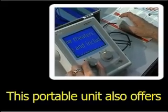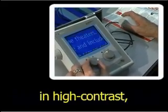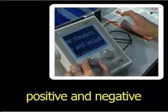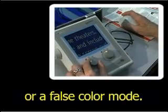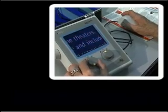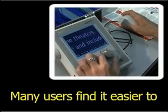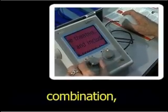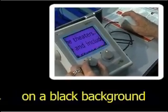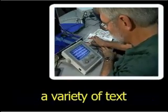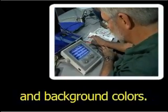This portable unit also offers users the option of viewing in high contrast, positive and negative black and white images, or a false color mode. Many users find it easier to read text in a certain color combination, such as yellow text on a black background, and they can choose from a variety of text and background colors.